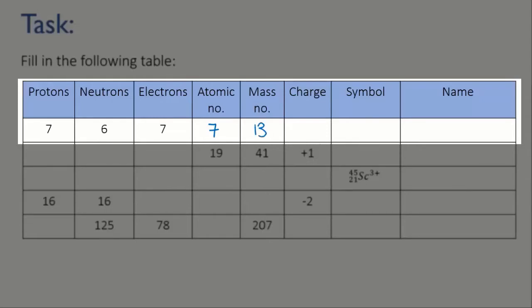The charge here is the positive charge from the protons plus the negative charge from the electrons, which is going to be seven minus seven, which is zero, so this is a neutral atom.